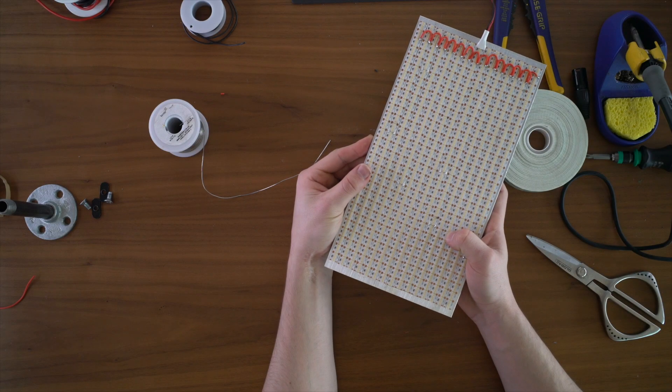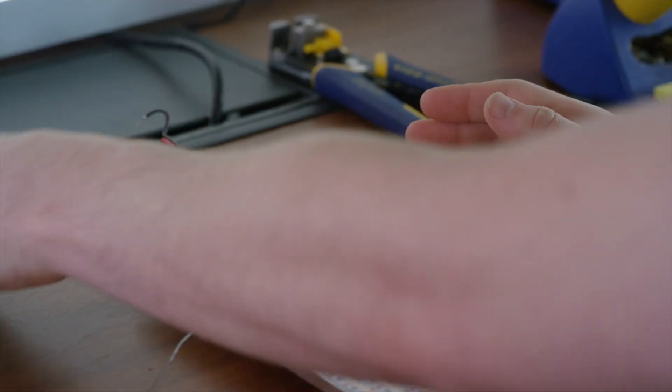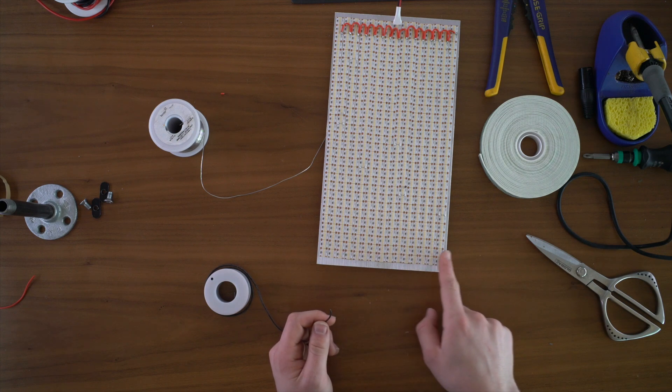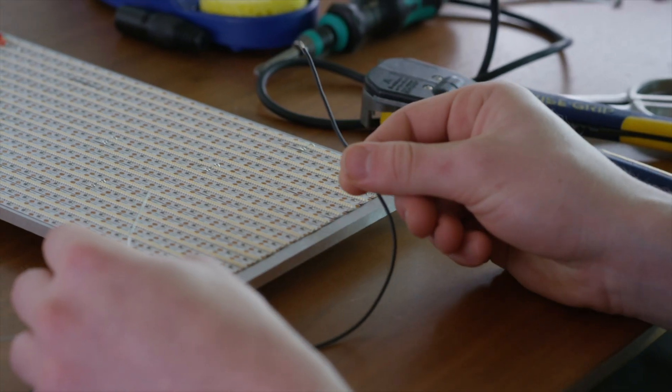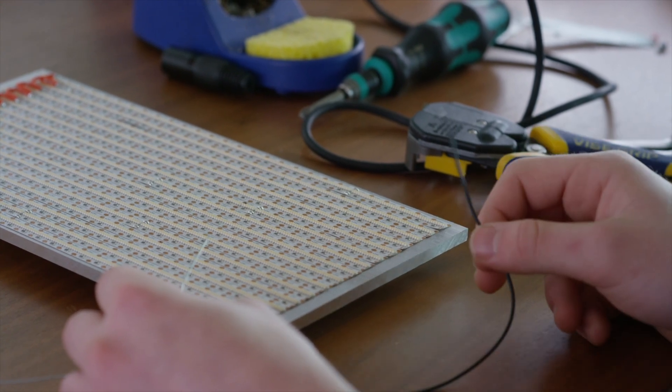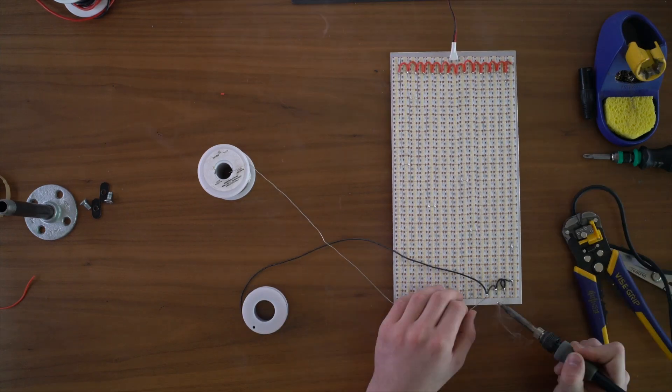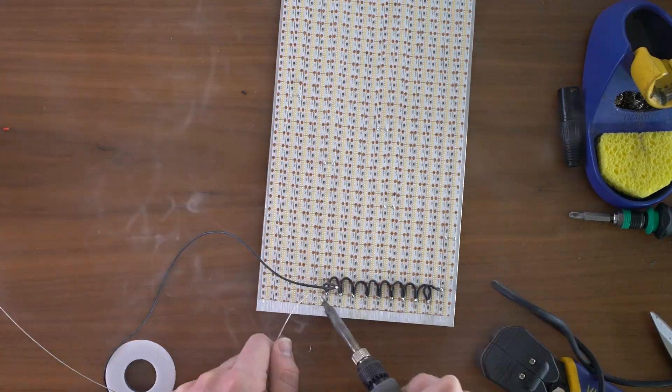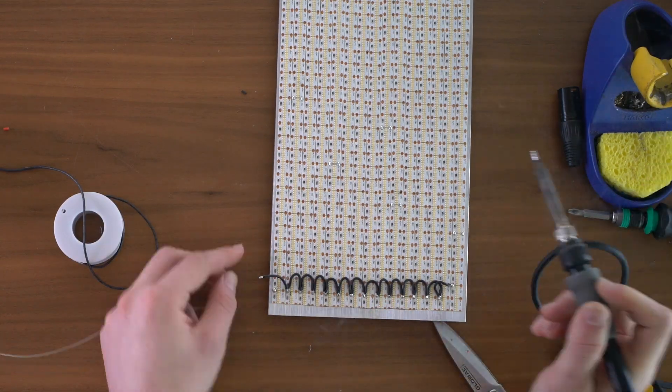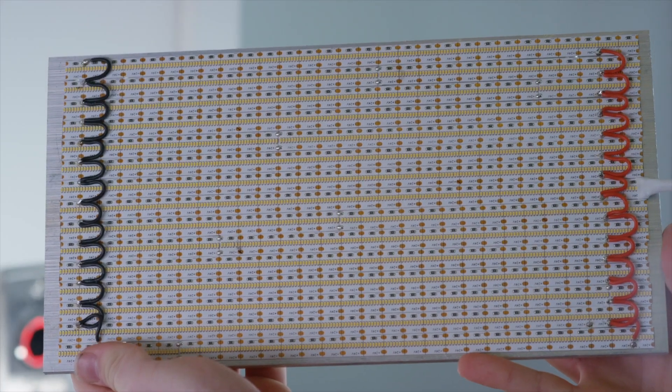So when you're done it should look something like this. Now that we're done with positive we're going to move on to doing negative. So we're going to repeat the process and this time I'm going to do it at the bottom of the panel. So I've already stripped this wire. I'm going to go ahead and tin it and tin the pad here on the negative side and repeat that process. So when you're done with that the panel should look something like this.